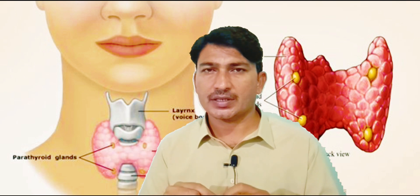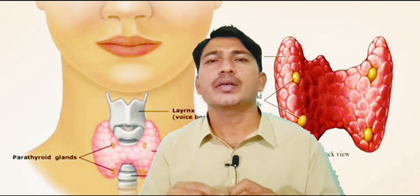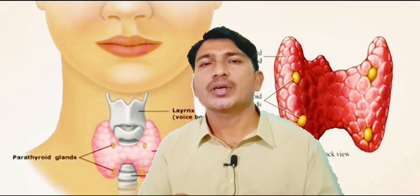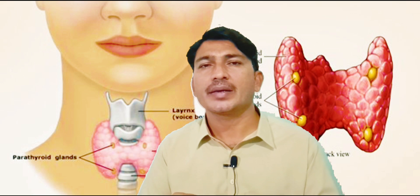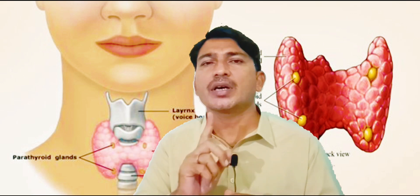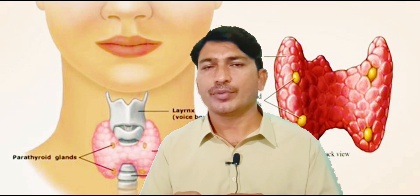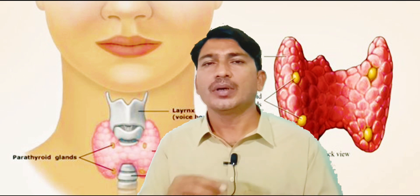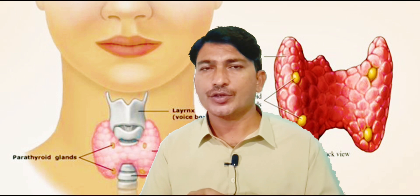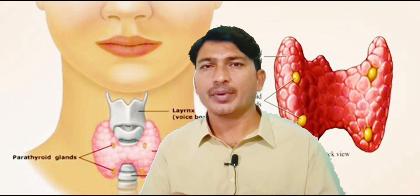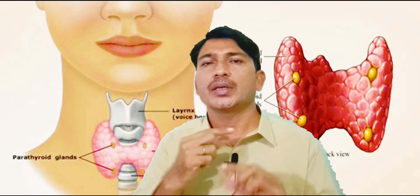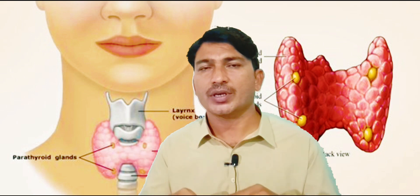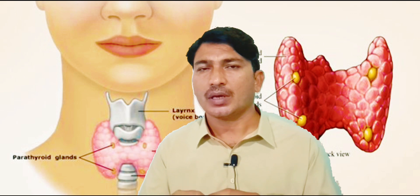First, let's discuss its location. It is located just below our Adam's apple. This extended structure on the inside of our neck is called the Adam's apple, which comes out when we hit puberty. Just below that there is a tube — we call it the respiratory tube, also called the trachea or sound pipe. On that pipe, there is a butterfly-shaped bi-lobed structure which is called the thyroid gland.